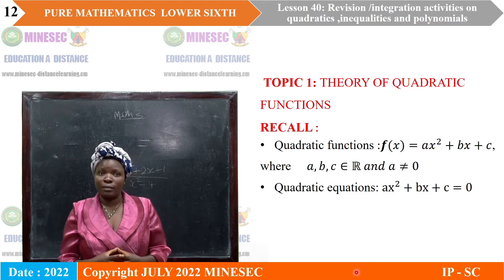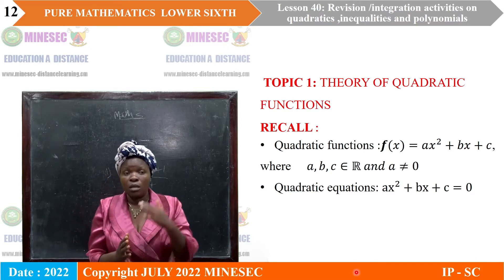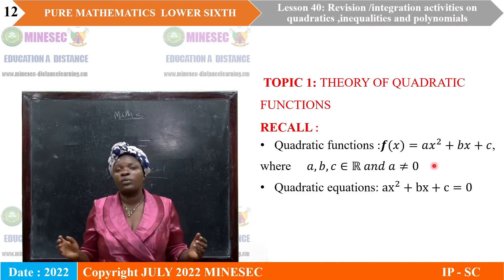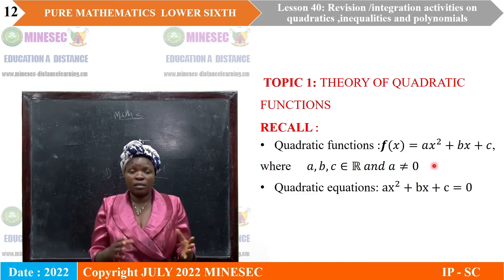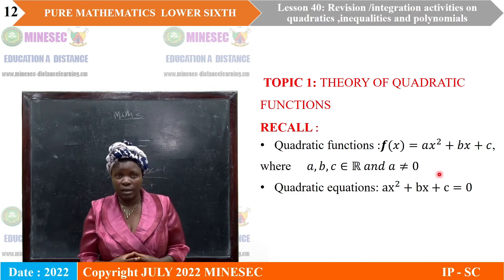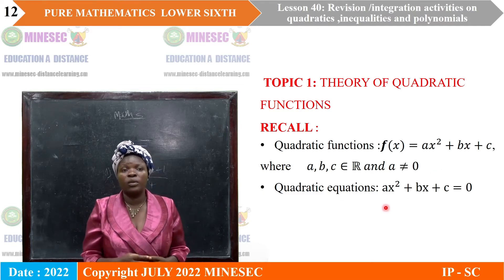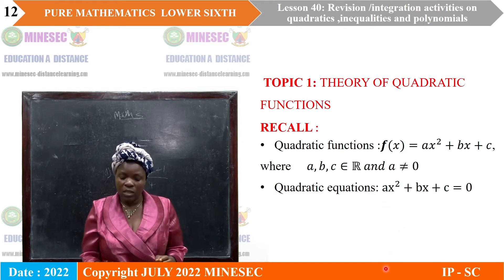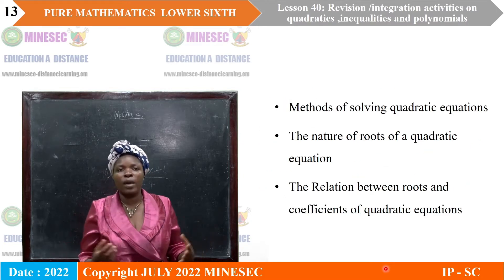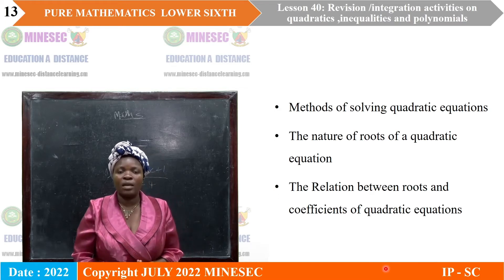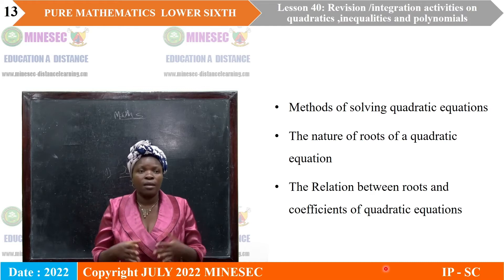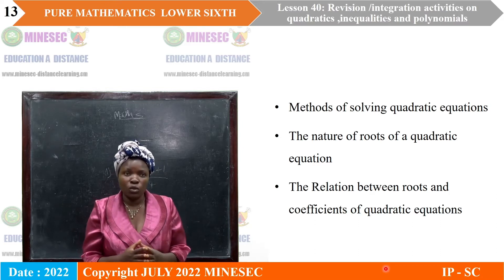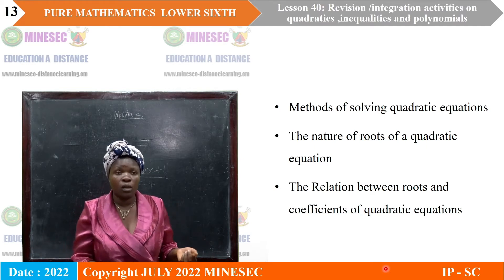Topic 1 is the theory of quadratic functions. Recall: a quadratic function has the form f(x) equals ax squared plus bx plus c, where a, b, and c are real and a is not equal to zero. A quadratic equation is ax squared plus bx plus c equals 0. You also need to recall methods of solving quadratic equations — factorization, the formula method, completing the square — as well as the nature of roots and the relation between roots and coefficients.